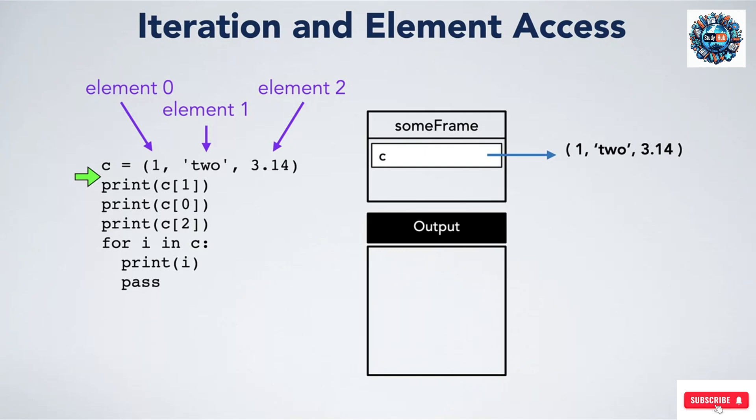Accordingly, C at 1 evaluates to the string two, and we print out two. Next we print C at 0, which is the number 1, and then we print C at 2, which is 3.14.